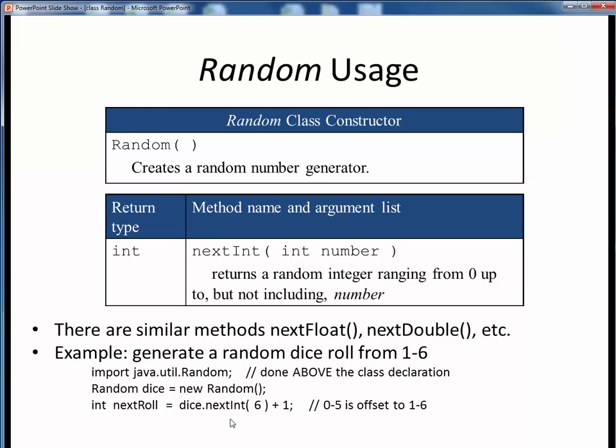Finally, once we have this dice object on hand, then we can use it as a random number generator. Here, we are calling the nextInt method to generate one of six possible random values ranging from zero to five, but not including six.